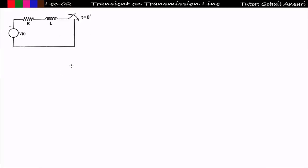Hi guys, welcome to Getmatic. In the previous lecture we saw the concept of single line diagram as well as the reactance diagram, and we solved some previous year GATE problems on how to plot the reactance diagram. Now in this lecture we will start one of the important concepts — that is the transient on transmission line: what will happen to the transmission line if I short circuit it suddenly. So let's get started.